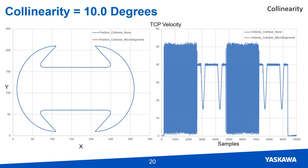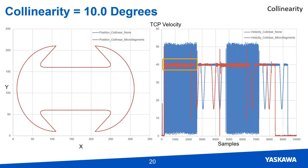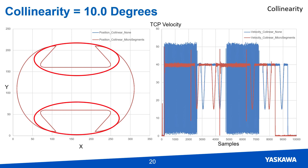If the collinearity setting is increased so that the multiple line segments are seen as linear segments, the motion path appears the same, but the velocity changes. Since the small microsegments that make up the big curves are seen as collinear, no transitions are added and the velocity does not vary as much. The corners appear to be one curve instead of multiple microsegments. Less time is also taken creating the part because the curve motion does not need to adjust velocity as much. Since the six longer lines are still considered non-collinear, transition segments are added to round the corners.